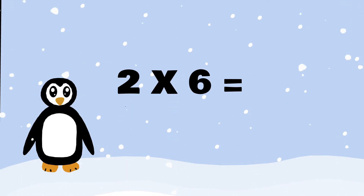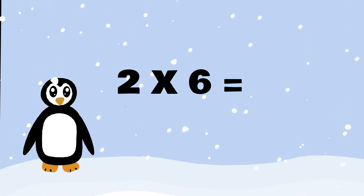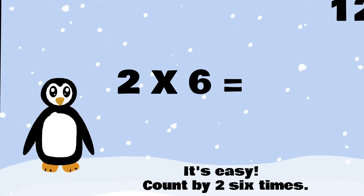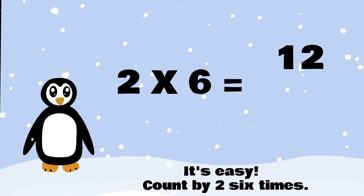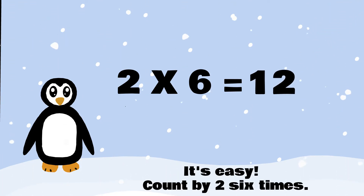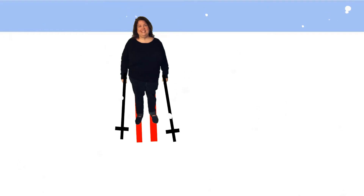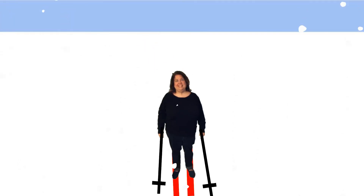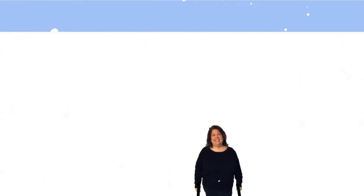What does 2 times 6 equal? It's so easy. Count by 2 six times: 2, 4, 6, 8, 10, 12. Or you can double the 6 — 6 plus 6 equals 12.